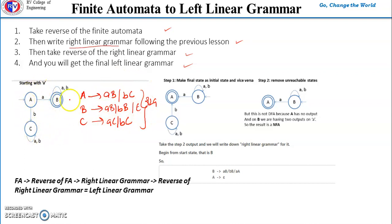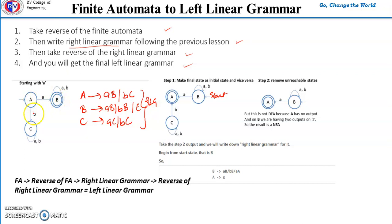To write left linear grammar, first we reverse this automata. To reverse the automata, make the start state the final state, make the final state the start state, and reverse the direction of all the edges. Here, B becomes the start state and A becomes the final state. There was an edge from A to B — now there is an edge from B to A. Instead of A to C, the direction is now from C to A. Self-loops remain the same. This is the reverse of the finite automata — step one.